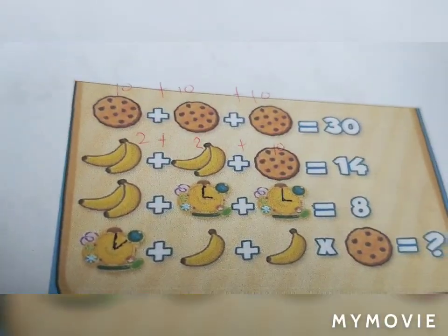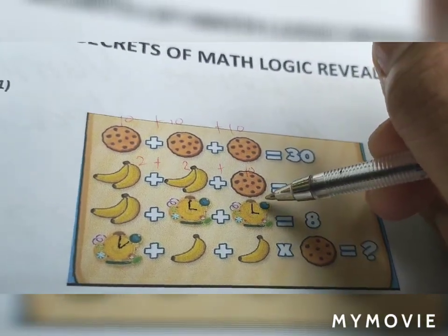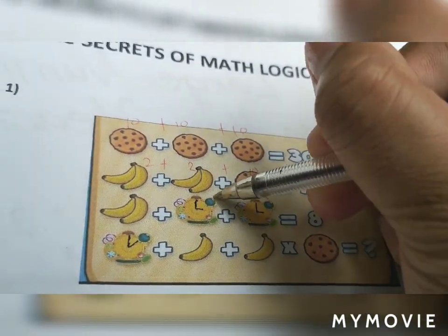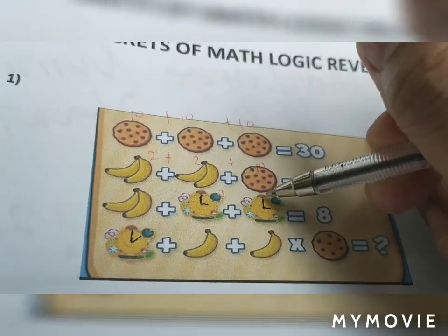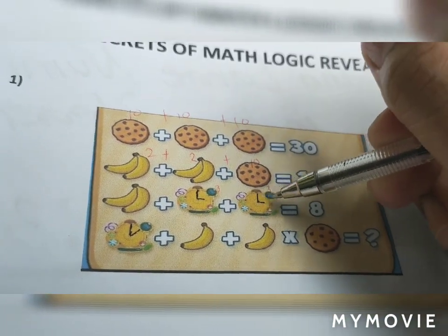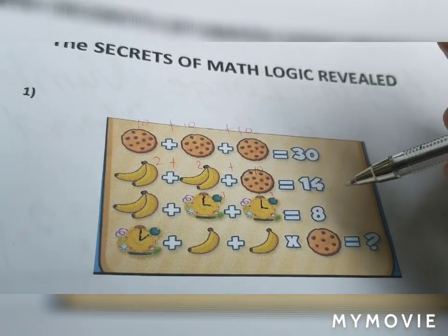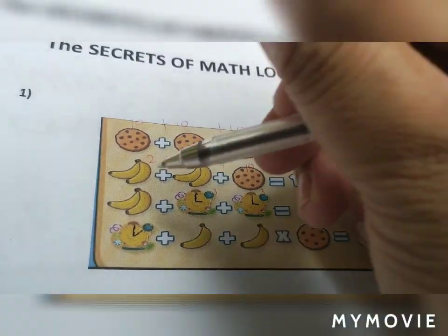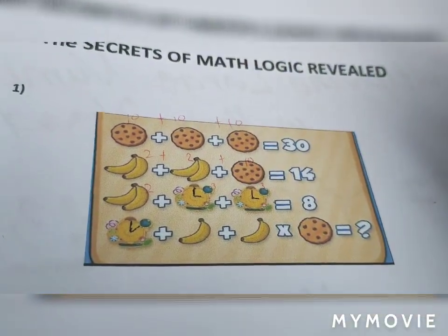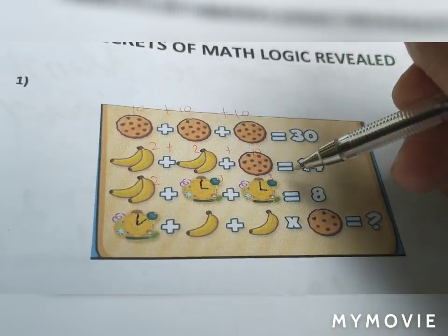For the third equation, we have here three, three — as you can see the endpoint of the clock is three, three. Since we have two bananas, this is two. So to make it eight, that is 2 plus 3 plus 3 equals eight.